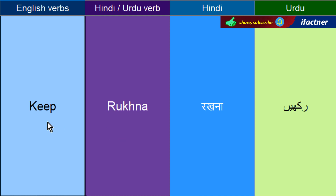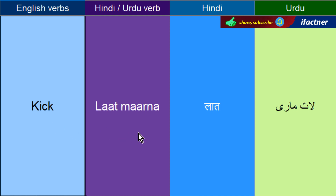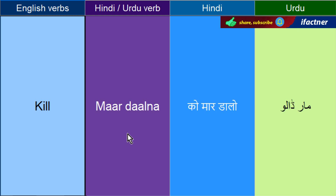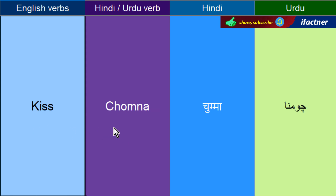Rakhna — Keep. Laat maarnay ko kaha jata hai — Kick. Mazaak kerna — Kid. Waisay toh bacche ko kehtay hain kids ya kid, lekin mazaak kerne ko bhi kehtay hain. Jis saan mein kehtay hain I am just kidding — mein toh bas mazaak ker raha hoon. Maar daalne ko kehtay hain — Kill. Chumna — Kiss. The mother is kissing her child — maa bachay ko chum rehi hai. Jukna — Kneel.